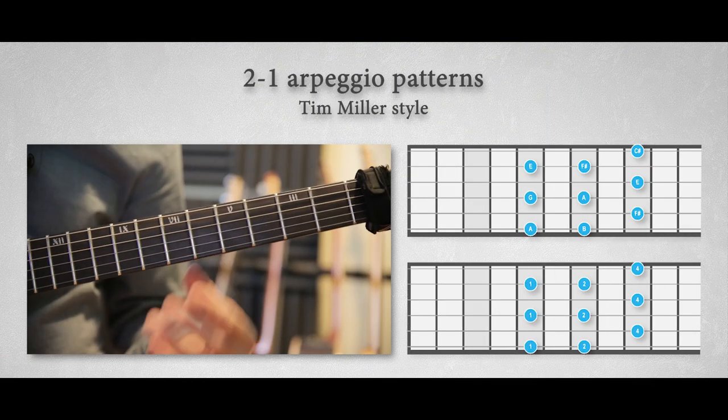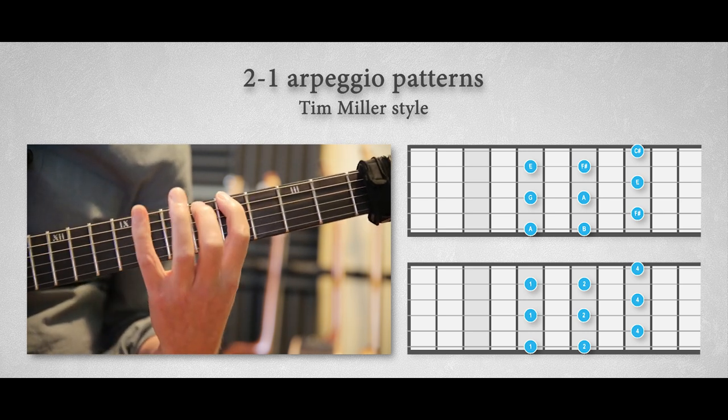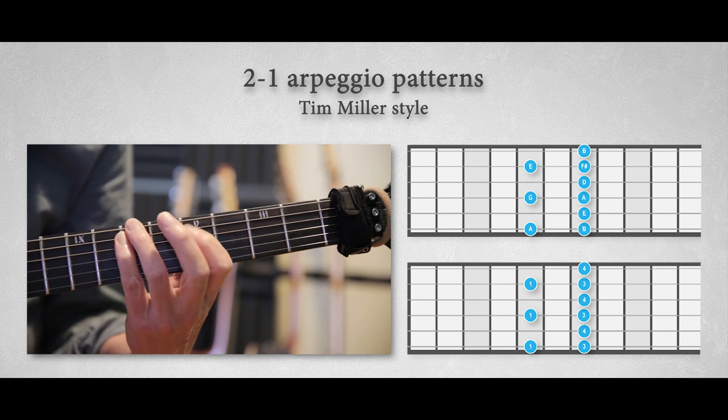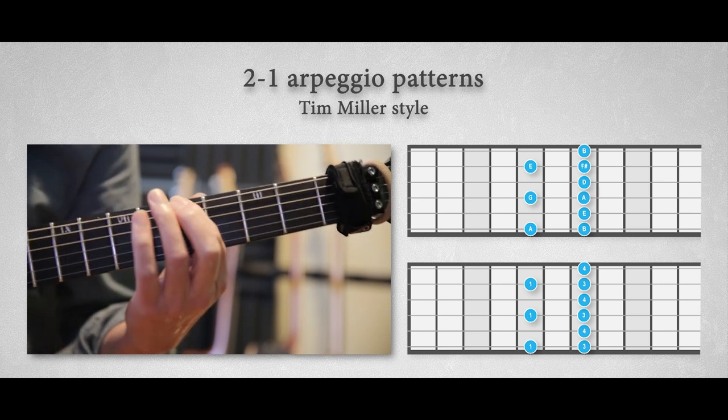In this video I show you two fingerings of Tim Miller's piano-like arpeggio approach. The first one goes like this, and you can project this on every scale. The second one is a more compressed version. This is almost a symmetrical fingering, but it can be adapted to suit your needs.